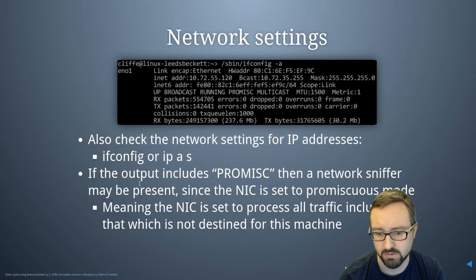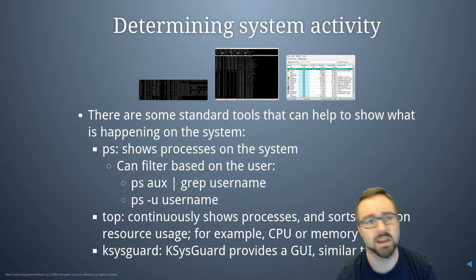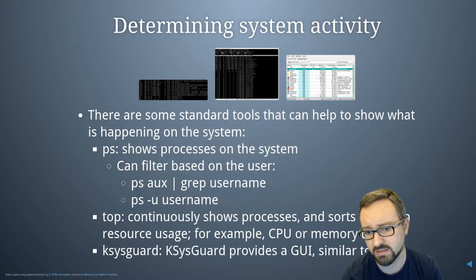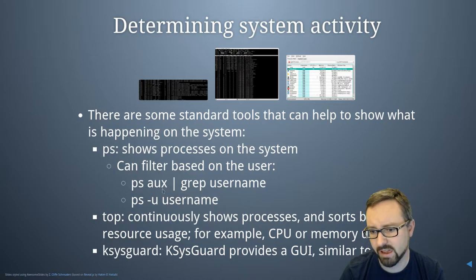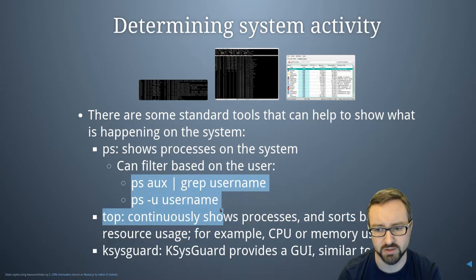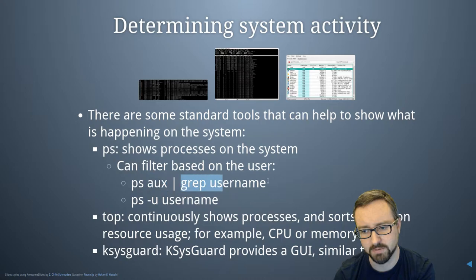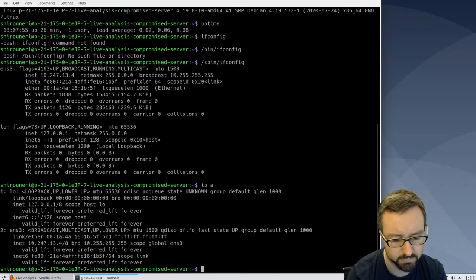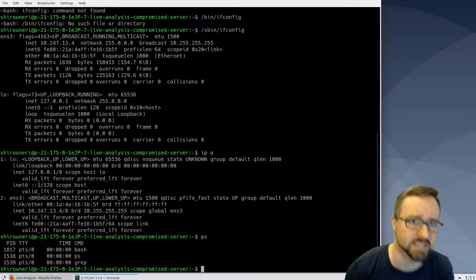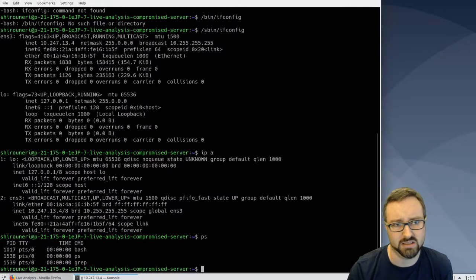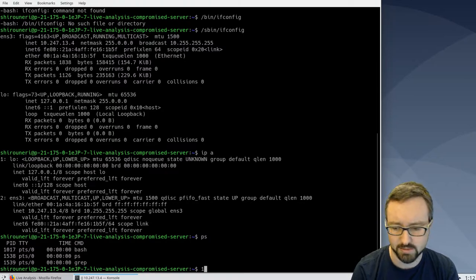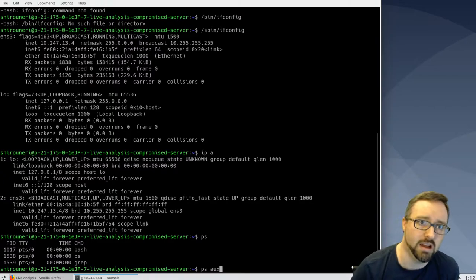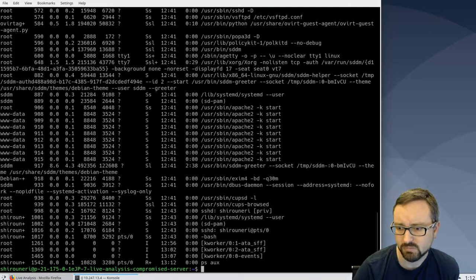There are a number of different commands you can use to list all the processes on the system. There's the `ps` command, and you can filter by user a few different ways — list everything and grep for a username, or use `ps -u` and then the username. If you just use `ps` it lists processes within the current session; `ps aux` is the most common, which lists all processes and gives you a detailed view of each.